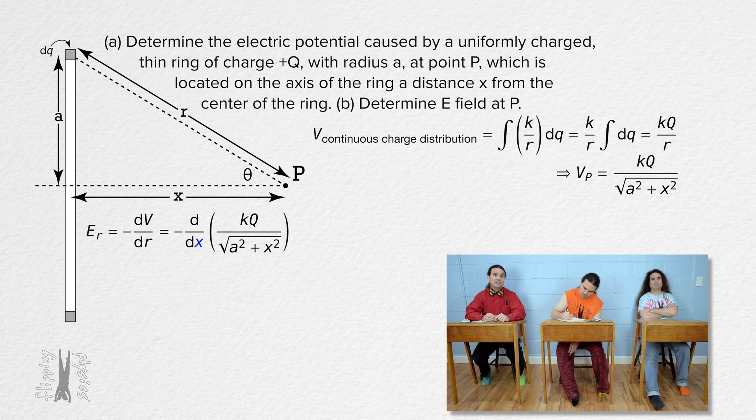The Coulomb constant and charge are constant for every value of x, so those can come out from the derivative. And 1 over the square root is the same as an exponent of negative 1 half.